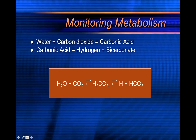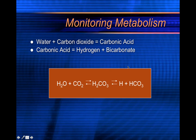Water plus carbon dioxide equals carbonic acid, and carbonic acid equals hydrogen plus bicarbonate. If you like chemical equations, here you go: water plus CO2 becomes carbonic acid, which ends up becoming hydrogen plus bicarbonate — hydrogen being an acid. So CO2 indirectly ends up having hydrogen ions become loosely associated with an increase in CO2, meaning an increase in acid, because hydrogen is acid.